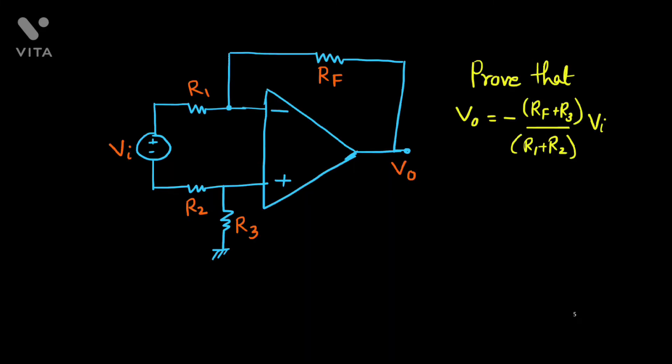Now, consider this figure. So instead of current source, now I started with the voltage source Vi that is connected here and a similar circuit. So this resistance is R1, this one is R2, this is R3 and this feedback resistance is Rf. Now, we will try to prove that the output voltage is given by this one: minus (Rf + R3) upon (R1 + R2) times Vi.